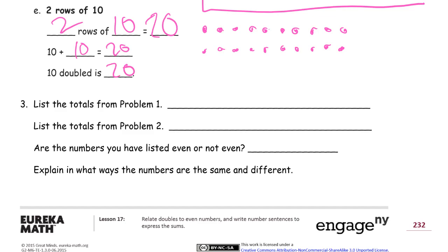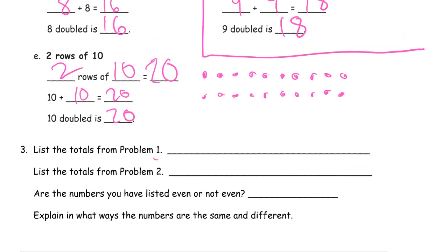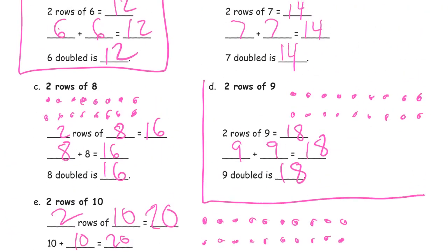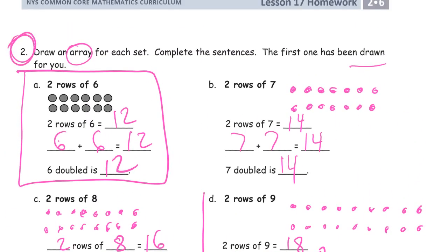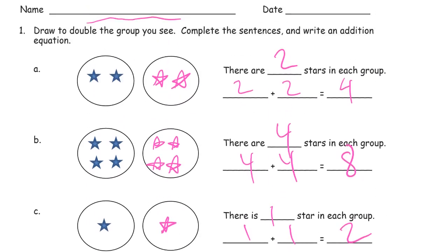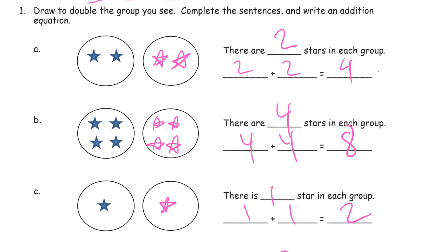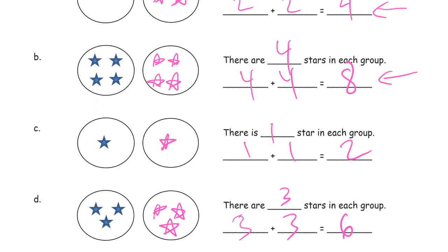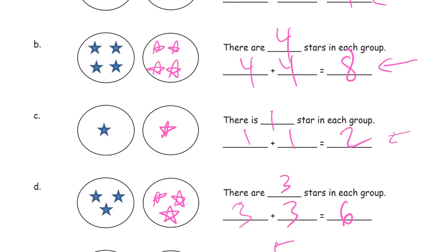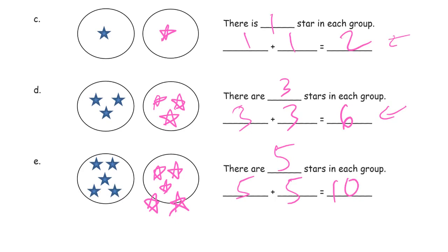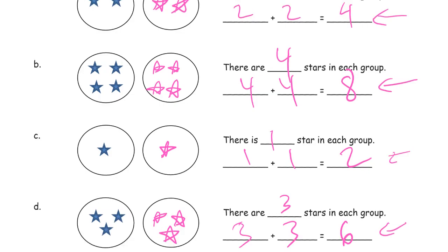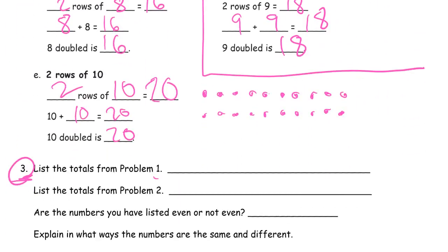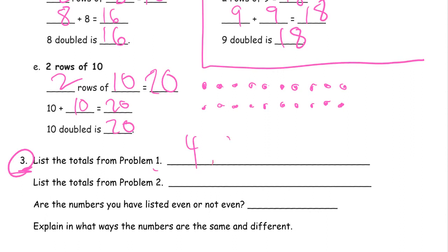List the totals from problem one. So, problem one, right? See, this is problem three. And, this was problem two. So, problem one is back on the first page. That's this one. So, the totals are, here, four, eight, two, six, and ten. Hopefully, you have one-sided pages. They're not front and back. So, you can look at both of them at the same time. But, if not, you're trying to save paper. Four, eight, two, six, ten. You can just go back and forth. Four, eight, two, six, ten.